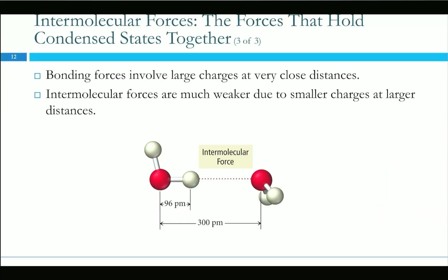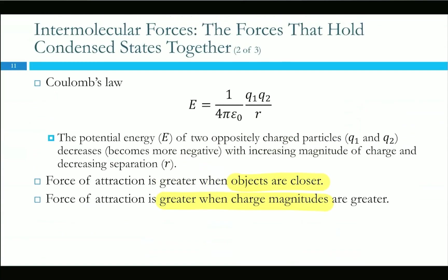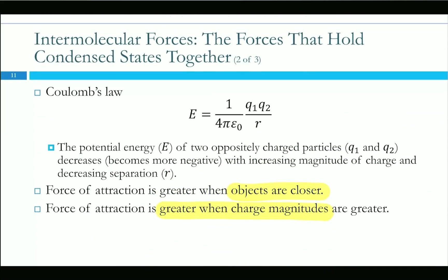Most of our intermolecular forces come from opposite charges. Coulomb's Law relates the charge and distance to that attractive energy. Basically, if we can get things closer together or have greater charge magnitude, we get greater attractions. So smaller, more charged things tend to have stronger intermolecular forces. Intermolecular forces occur at a distance of around 300 picometers versus an actual covalent bond at 96 picometers — so the force is about three times weaker.